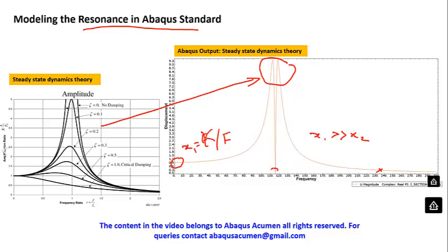In this particular problem we also encounter an anti-resonance condition. Anti-resonance is when, along the loading direction, you get a displacement and then suddenly the displacement goes in the other — negative — direction. We will model this, and you will get a lot of learning out of how to model resonance and anti-resonance.